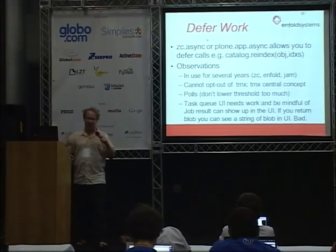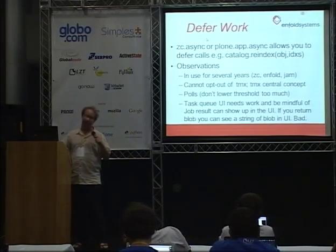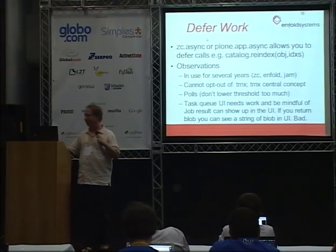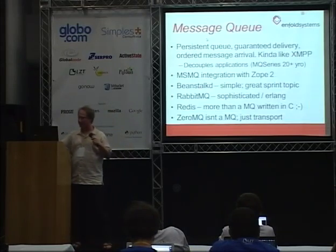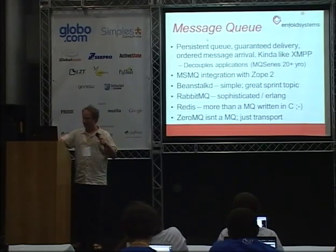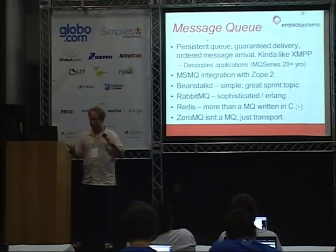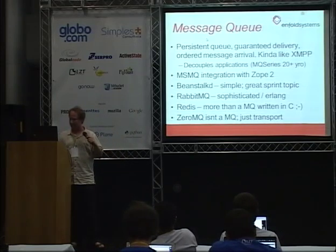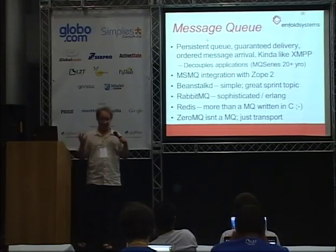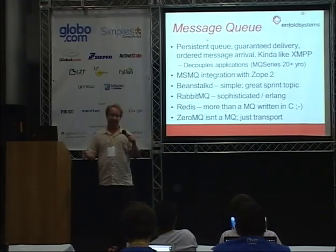The task queue might have a UI problem if your job result generates a binary. The other flip side is actually a message queue, which is becoming quite popular. MQ series has probably existed for at least 20 years. This is a normal pattern inside the enterprise.